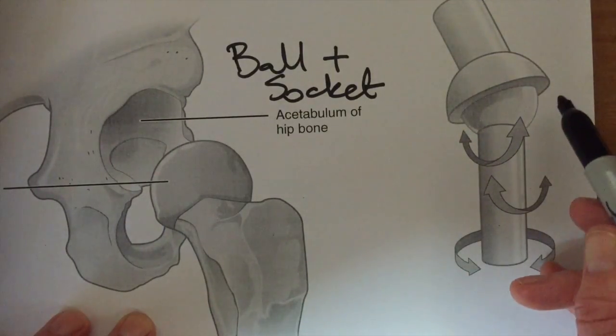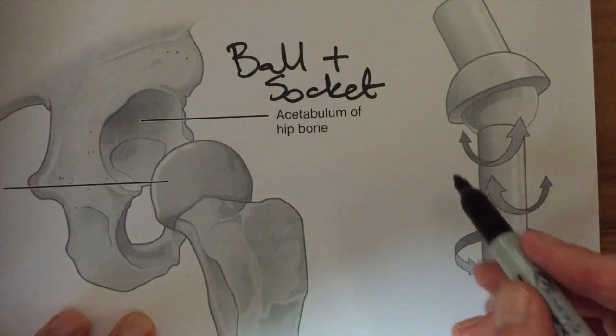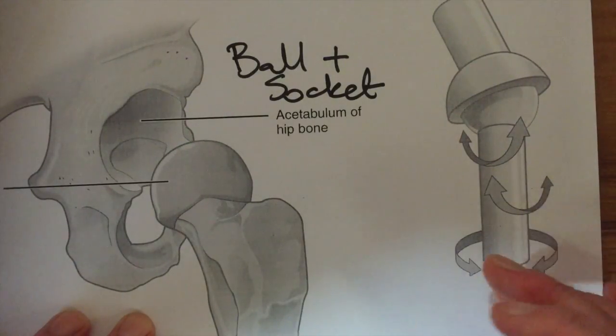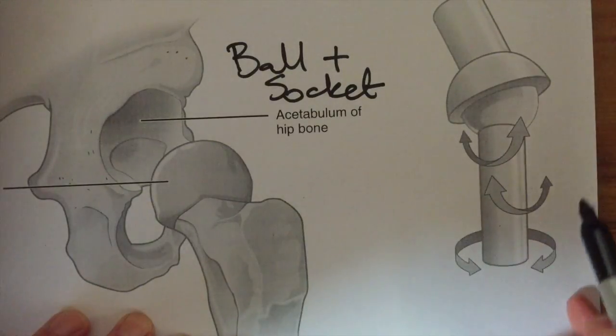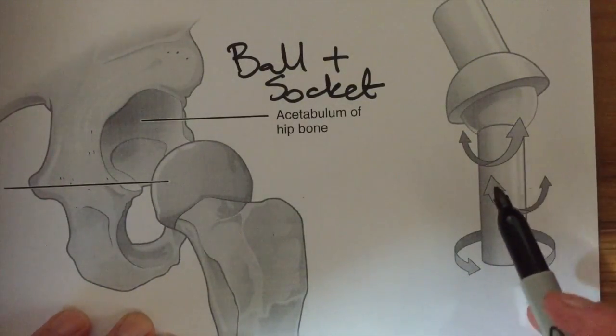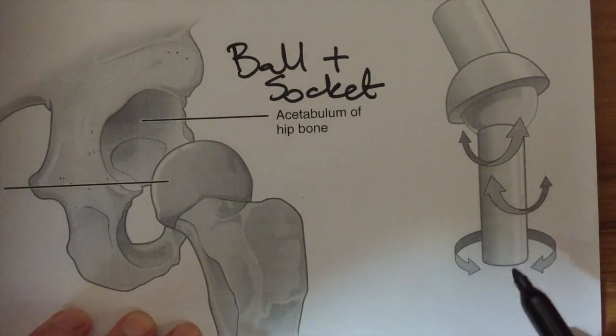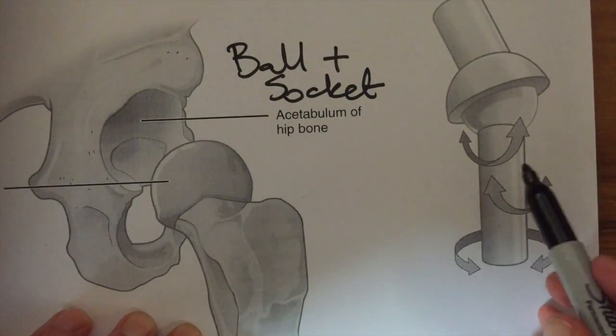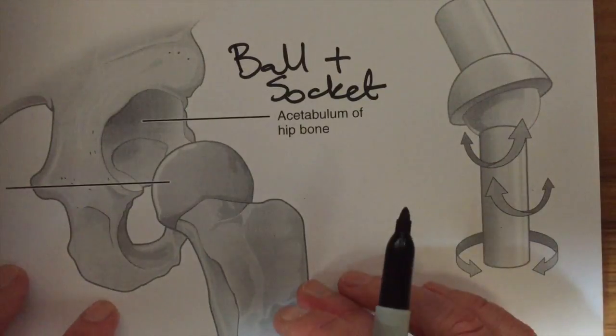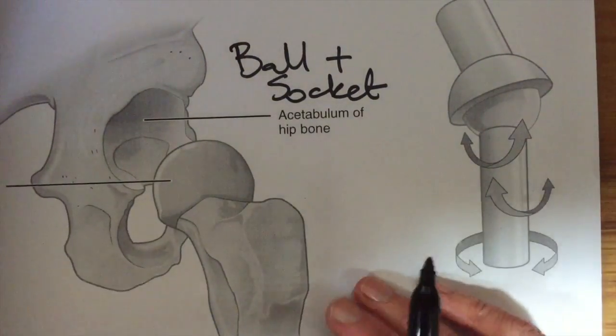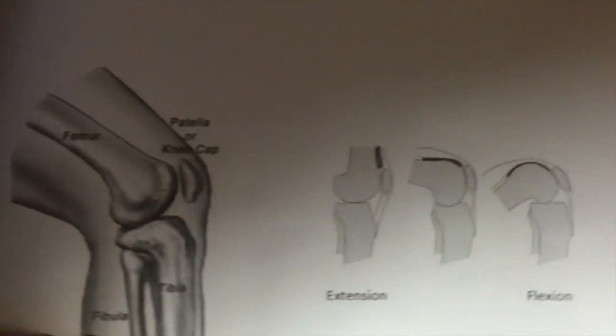The bone that sits within the socket can move back and forth, so that's flexion and extension. It can move around, so that's rotation, and we also have circumduction, which is like moving an ice cream cone, but effectively it's similar to rotation and adduction abduction.